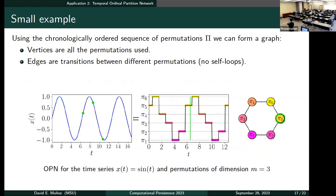So I have an example here. Here we have the time series coming from the sine function and we have also dimension three, so we have six possible permutations. And for each of these vectors of three points in green, we assign that to one of the permutations from pi one to pi six.